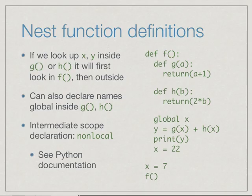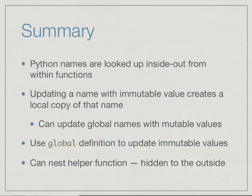Global allows us to transfer an immutable value from outside into the function and make it updatable within a function. To summarize what we have seen: Python names are looked up inside out from within functions. If we update an immutable value, it creates a local copy, so we need to have a global definition to update immutable values.